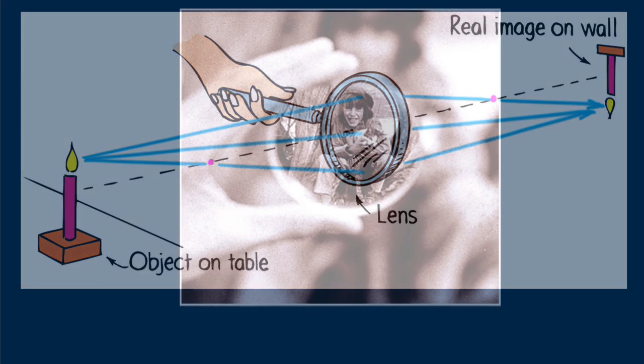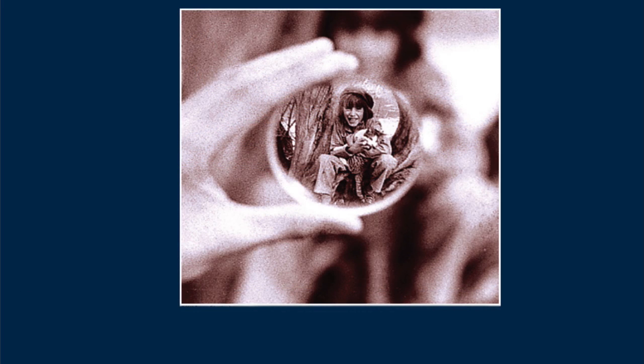A diverging lens, on the other hand, used alone produces a reduced virtual image. It makes no difference how far or how near the object is. When a diverging lens is used alone, the image is always virtual, right side up, and smaller than the object.